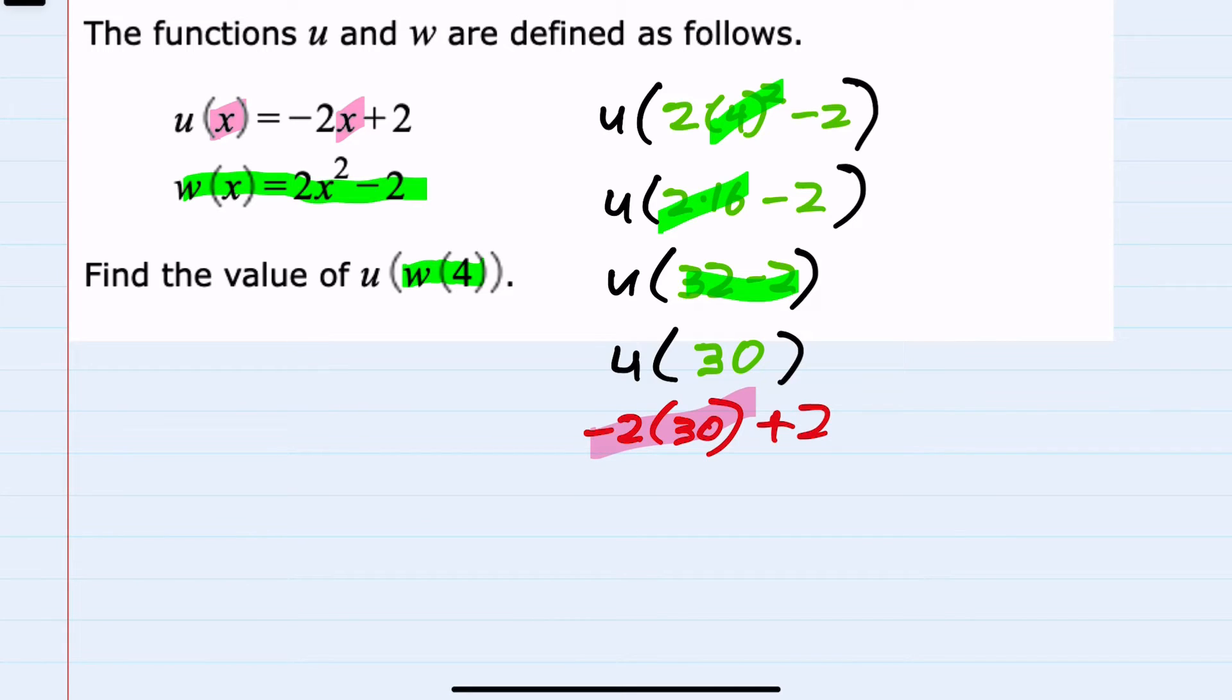Following order of operations, we would do multiplication first. Negative 2 times 30 is negative 60 plus 2. Negative 60 plus 2 would give us negative 58.